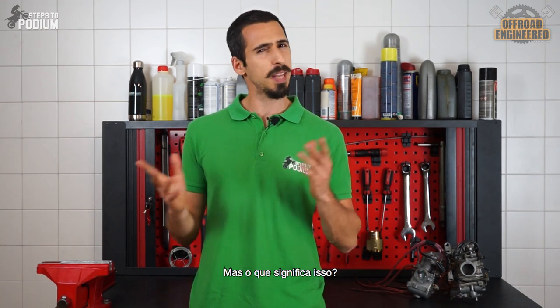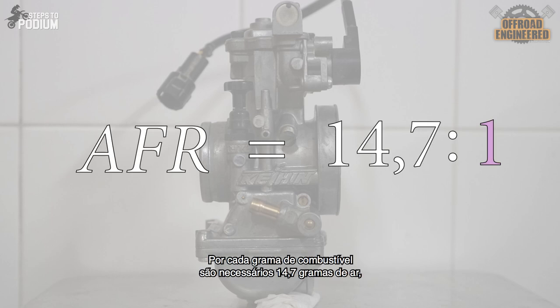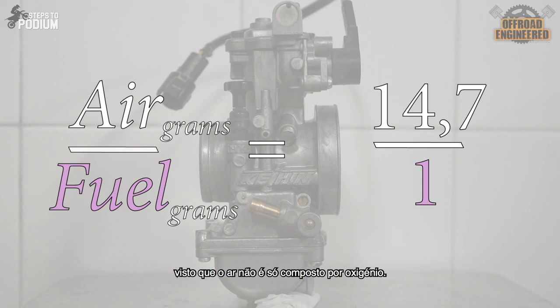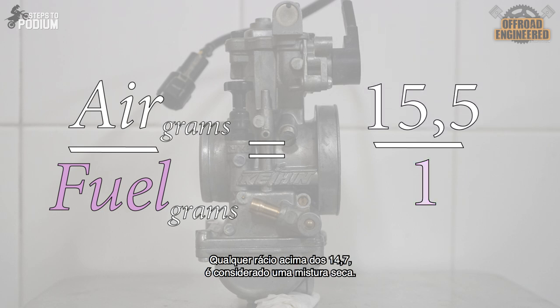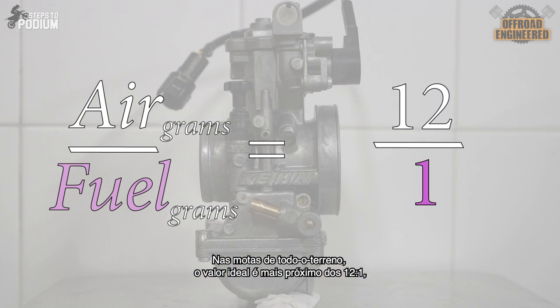But what does that mean? For every 1 gram of fuel there has to be 14.7 grams of air, since air is not just made of oxygen. Any air fuel ratio under 14.7 is considered a rich mixture and anything more than 14.7 is considered a lean mixture. However, in dirt bikes the ideal air fuel ratio is closer to 12 to 1, since dirt bikes are performance oriented machines rather than the epitome of efficiency.